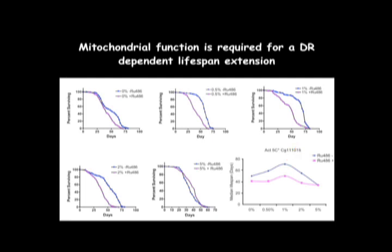However, these effects are abrogated when you inhibit mitochondrial function using RNAi of complex 1 or complex 4 genes in Drosophila.